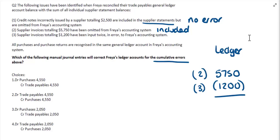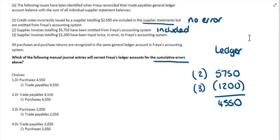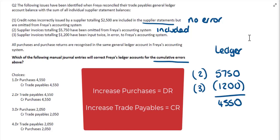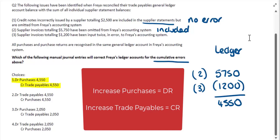The $5,750 minus the $1,200 gives us $4,550. This net effect relating to supplier invoices is going to increase purchases within the accounting system and, as it's credit purchases, also increase trade payables. So if we've got an increase in purchases, we're going to debit, and if we've got an increase in trade payables — a liability — then we would credit. The correct answer is the first choice: debit purchases with $4,550 and credit trade payables with the same amount.